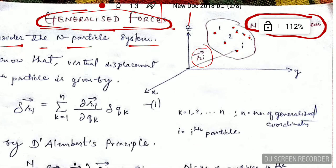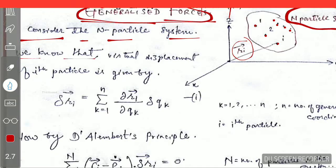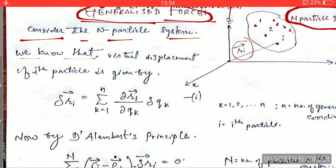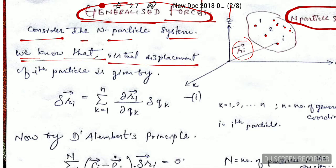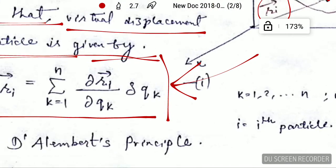We know that the virtual displacement of the ith particle is given by this expression — I have already explained virtual displacement in my previous videos, so please refer to those for the explanation. This is the virtual displacement, labeled as equation one.